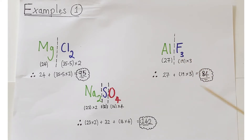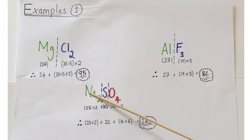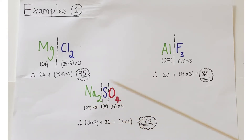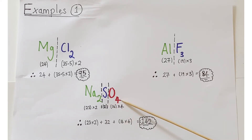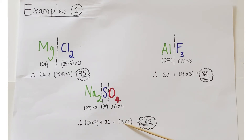The last simple example is sodium sulphate, Na₂SO₄. Na₂ means two sodium atoms: 23 × 2. One sulphur is just 32. O₄ — the subscript 4 must be accounted for: 16 × 4 for four oxygens. So (23 × 2) + 32 + (16 × 4) = 142, which is the relative formula mass of this compound.